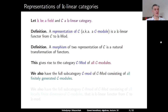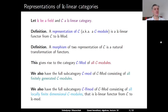We have the full subcategory C-mod (lowercase) of C-Mod (uppercase) consisting of all finitely generated modules. We also have the full subcategory C-LF-mod of locally finite-dimensional modules, consisting of all modules which are locally finite-dimensional — meaning that for each object in C, its image under the corresponding functor is a finite-dimensional vector space. In other words, these are k-linear functors from C to the category of all finite-dimensional k-vector spaces.